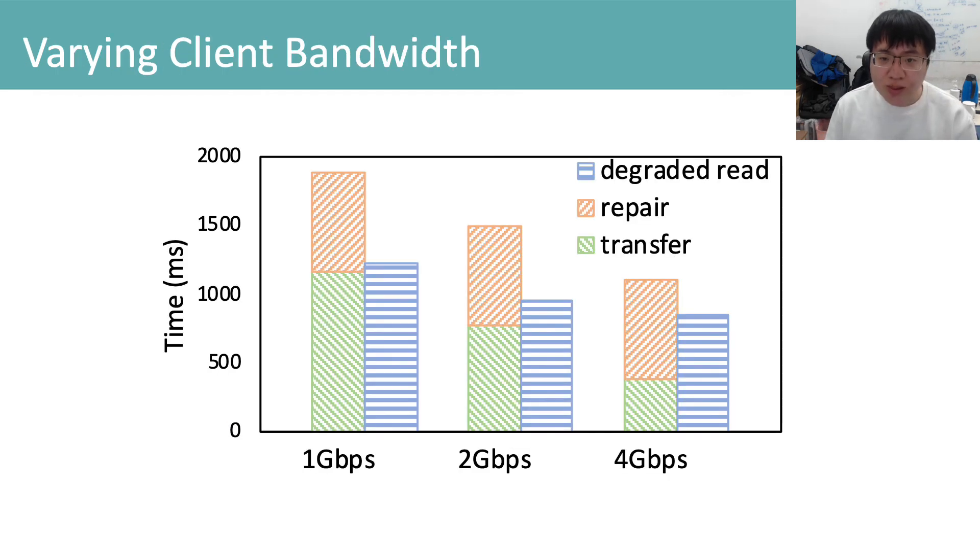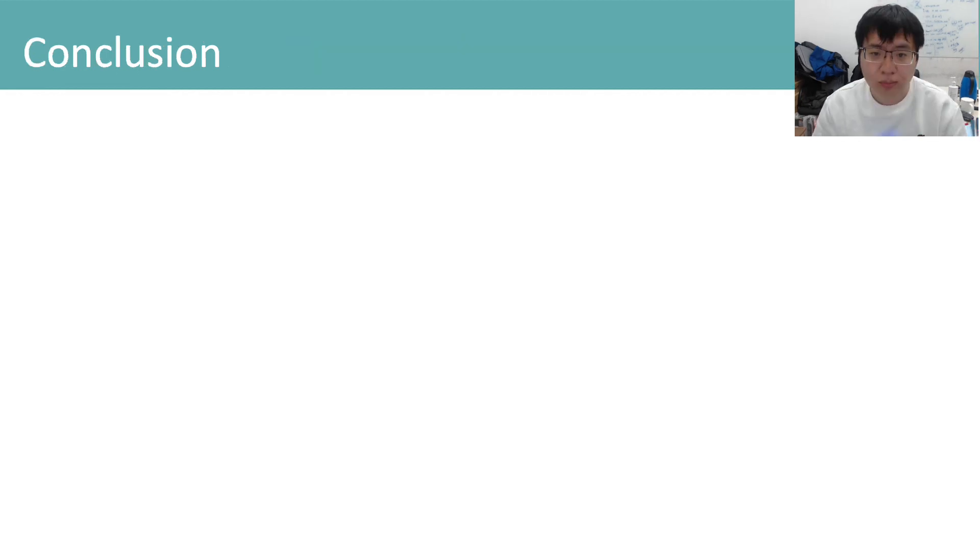We also vary client bandwidth to see how current bandwidth affects degraded read time. Results indicate that the degraded read time of geometric partitioning can be close to transfer time when network bandwidth is higher, close to repair time when network bandwidth is lower.